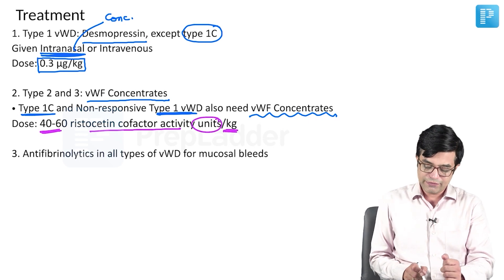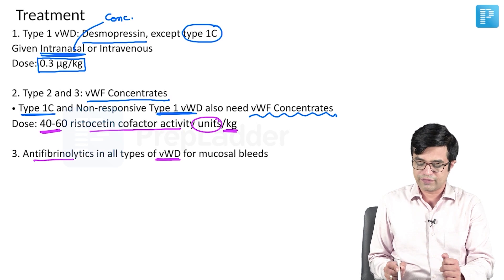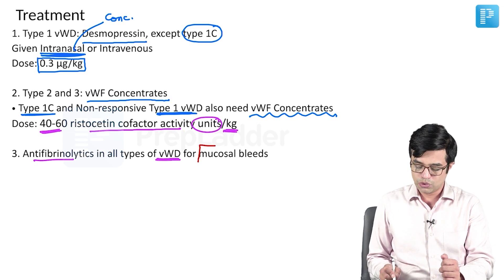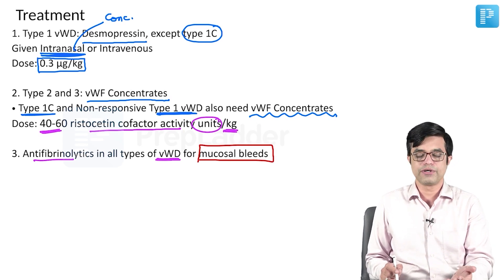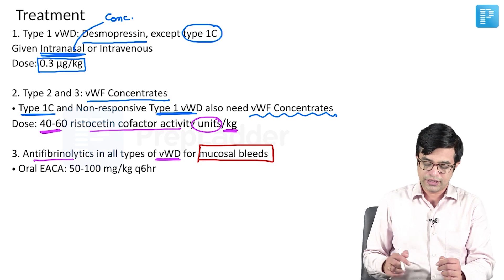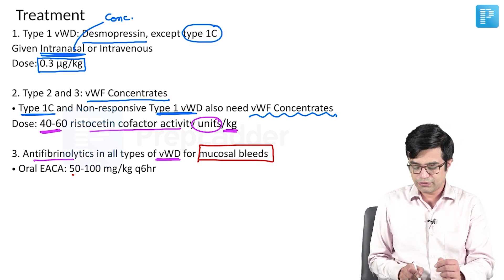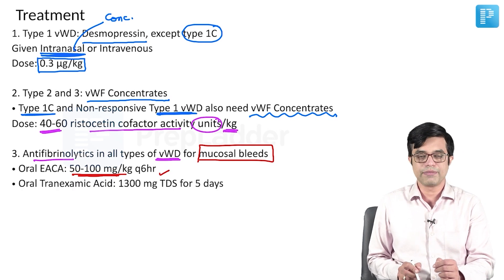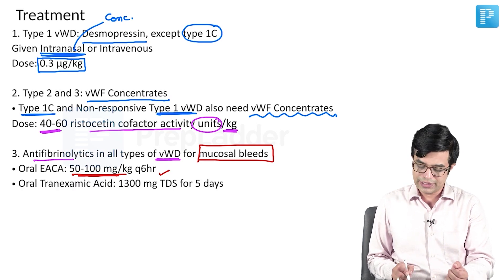And third, you will use antifibrinolytics in all types of von Willebrand disease where there are mucosal bleeds. The two antifibrinolytics which are commonly used are epsilon amino caproic acid and tranexamic acid. Oral EACA is given 50 to 100 mg per kg every 6 hours, whereas oral tranexamic acid is given in a fixed dose of 1300 milligram TDS for about 5 days.